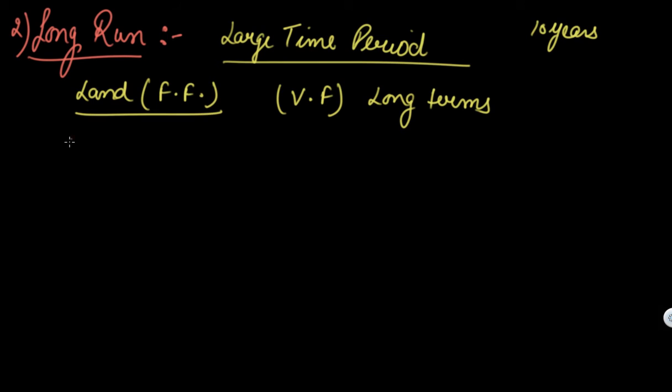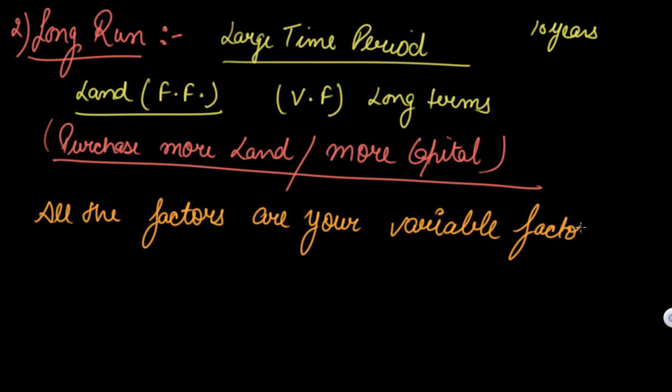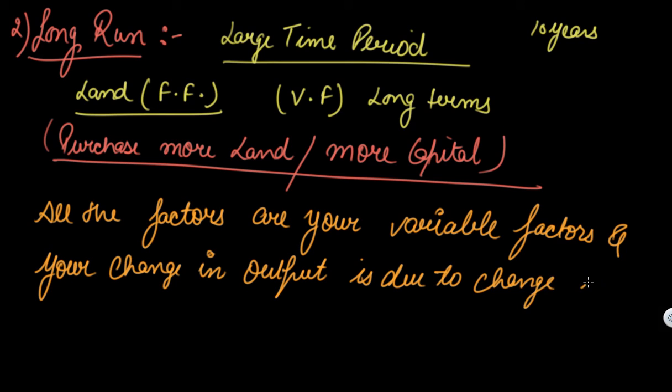That is you can purchase more land, you can ask for more capital in the long run and you can expand your business. So in the long run all the factors are your variable factors and your change in output is due to change in all the inputs, that is all the factors of production.